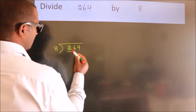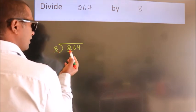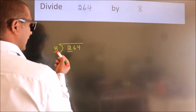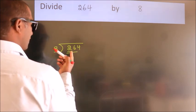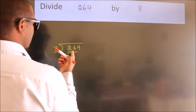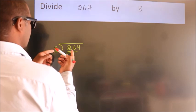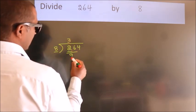Here we have 2. Here 8. 2 is smaller than 8. So we should take 2 numbers. 26. A number close to 26 in the 8 table is 8 threes, 24.